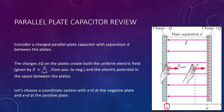First, realize that we can define zero to be wherever we want. In Physics 1, we said the ground was our zero level, and any time you raised an object off the ground, you're lifting it above your zero point. We can do the same thing here. We can say the negative plate is our zero point, just like the ground was in Physics 1. Any distance we move a charge away from zero, we can measure that distance.